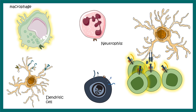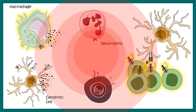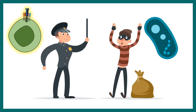Overall, there is a huge inflammatory response driven by inflammatory cytokines secreted by activated macrophages and dendritic cells. This inflammation creates a massive chaos in the immune system. Imagine this particular T cell is like a policeman who wants to capture a thief — this interaction is very specific.